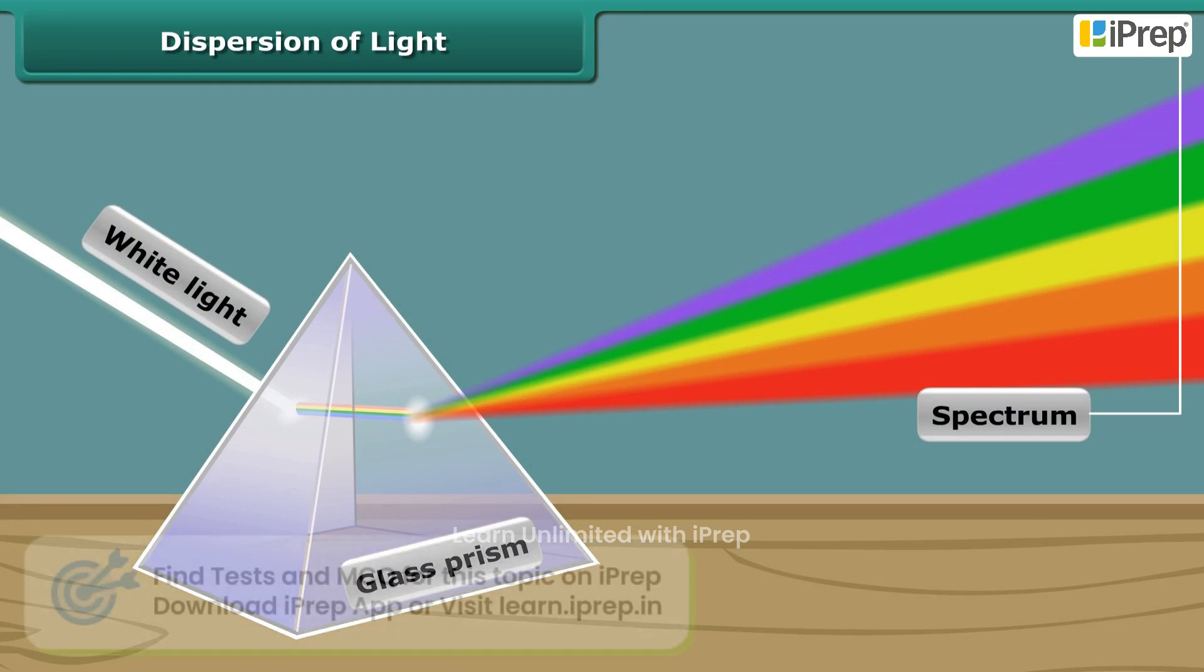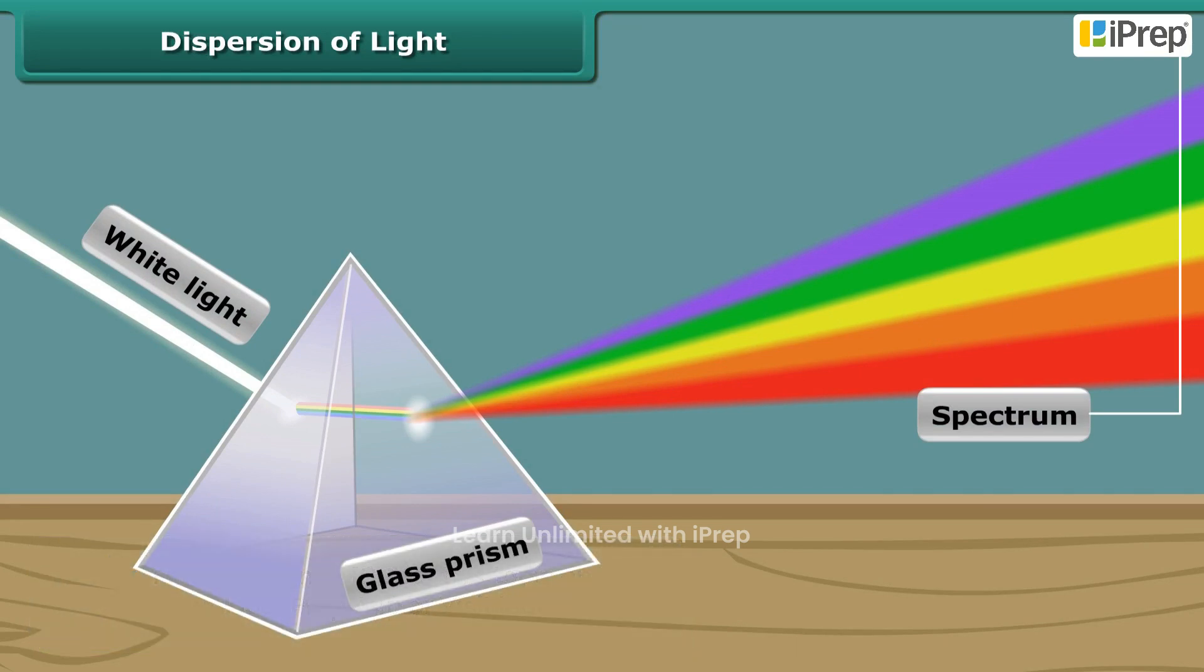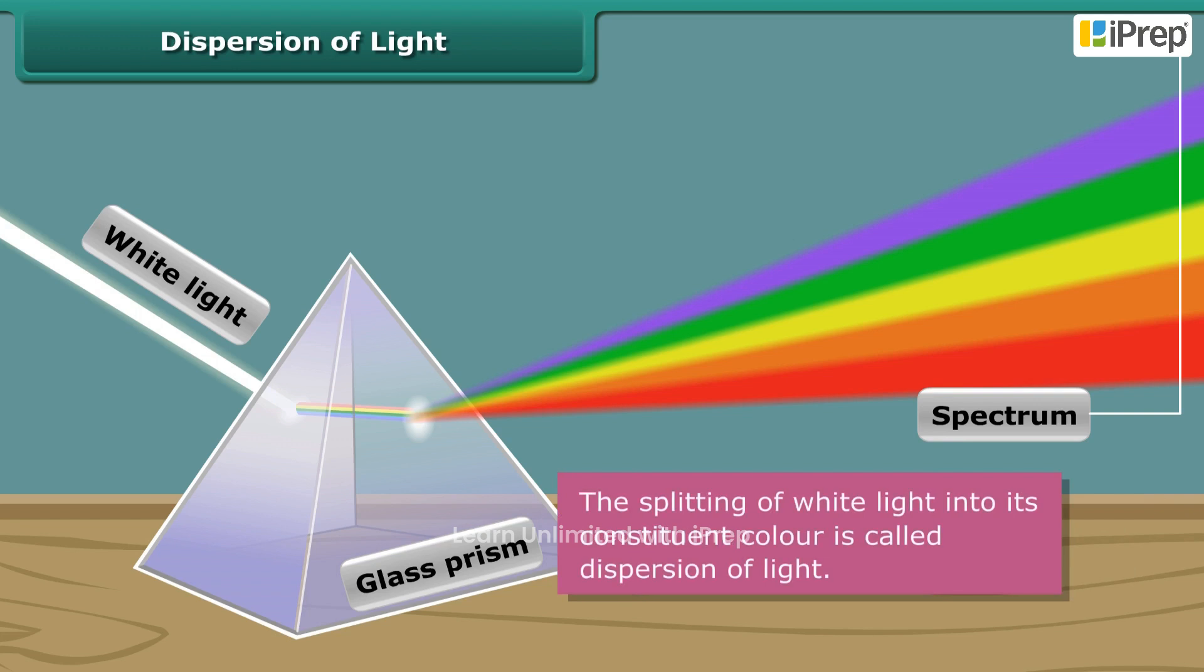It means that the beam of white light has split up into its constituent colors. The group of these colors represents the spectrum of white light. Therefore, this phenomenon of splitting of white light into its constituent colors is called the dispersion of light.